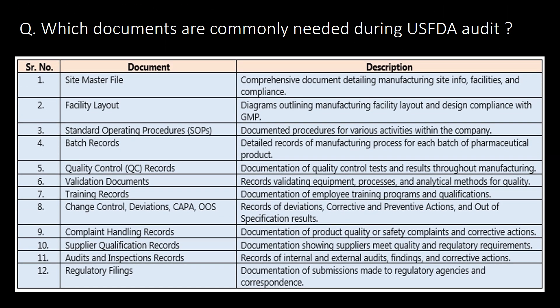Which documents are commonly needed during a USFDA audit? There is a list of 12 documents commonly needed. These include: site master file, facility layout, and standard operating procedures.